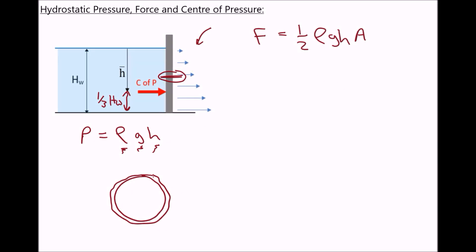If you prefer a more visual representation, then from the centre of pressure upwards we have a triangle, and the area of that triangle is going to be exactly the same as the area of this trapezium. Each of those represents the sum of the pressure field.